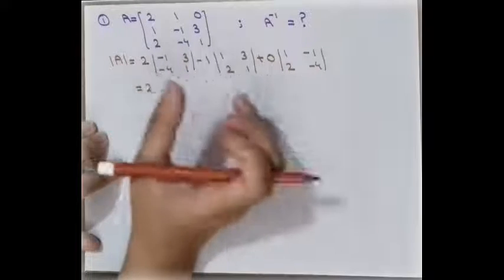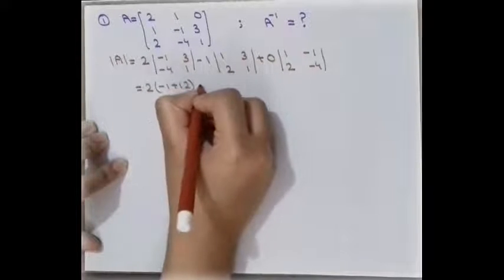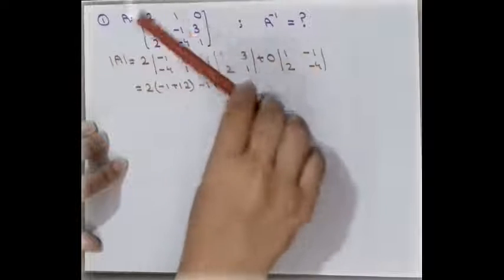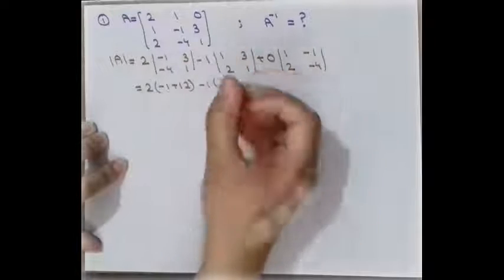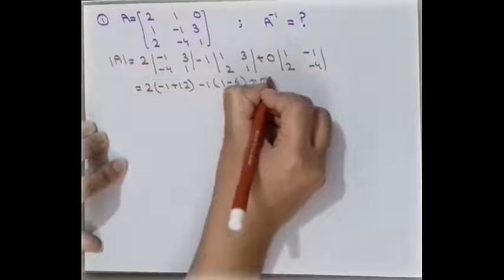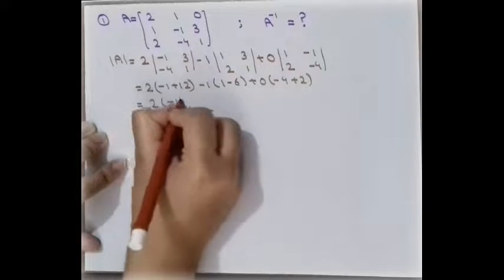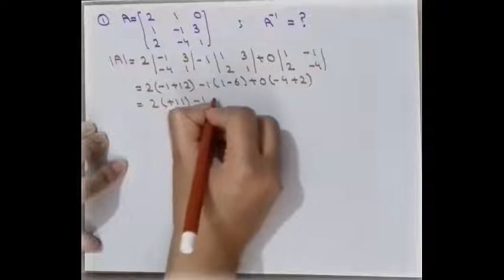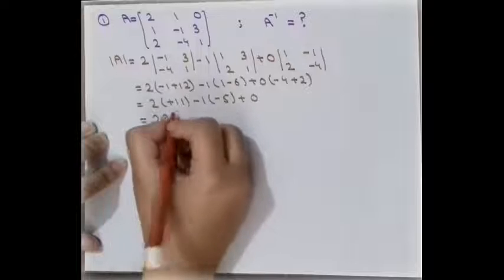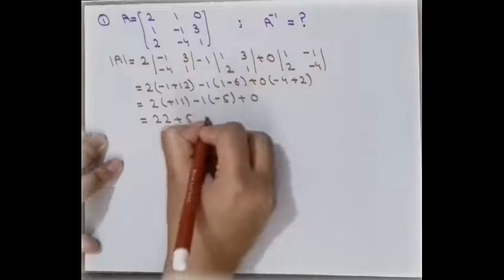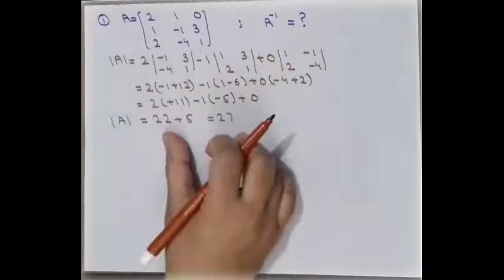Computing each 2x2 determinant: the first gives -1 + 12 = 11, multiplied by its element. The second gives 1 - 6 = -5, multiplied by 1 gives -5. The third gives -4 + 2 = -2, multiplied by 0 gives 0. Combining: 2(11) - 1(-5) + 0 = 22 + 5 = 27. So the determinant of matrix A is 27.